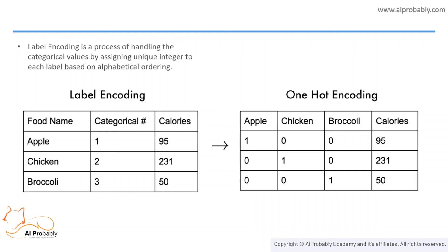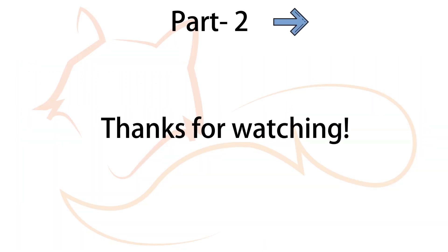Let's move on to label encoding. Label encoding refers to converting labels into numeric form to make them machine-readable. Machine learning algorithms can then decide better how to operate on these labels. For example, apple=1, chicken=2, broccoli=3. One-hot encoding and label encoding can be converted to each other. In one-hot format: apple → [1,0,0], chicken → [0,1,0], broccoli → [0,0,1]. This is how categorical features are encoded for machine learning.